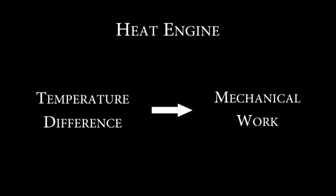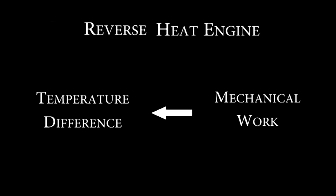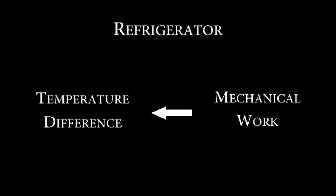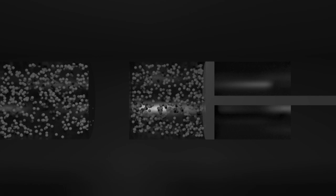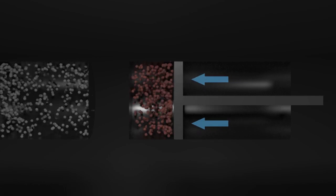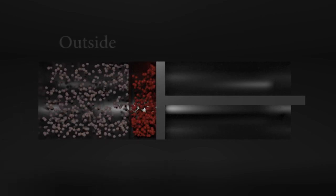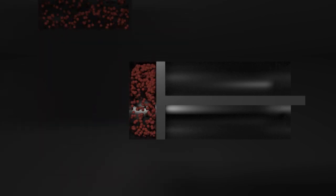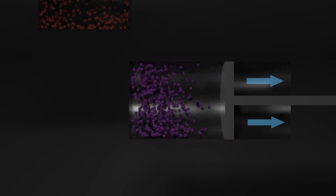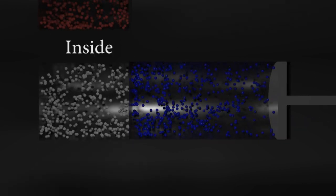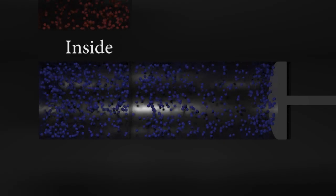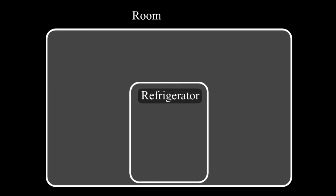We can actually reverse the heat engine. Instead of using a temperature difference to create mechanical work, we can use mechanical work to create a temperature difference. This is how your fridge works. It's really just a heat engine in reverse. If you push a piston in, that compresses the gas and heats it up. You can then transfer the heat to the outside of your fridge. Then pull the piston out. This expands the gas and cools it. You can then use this to cool the inside of your fridge. This cycle creates a temperature difference.